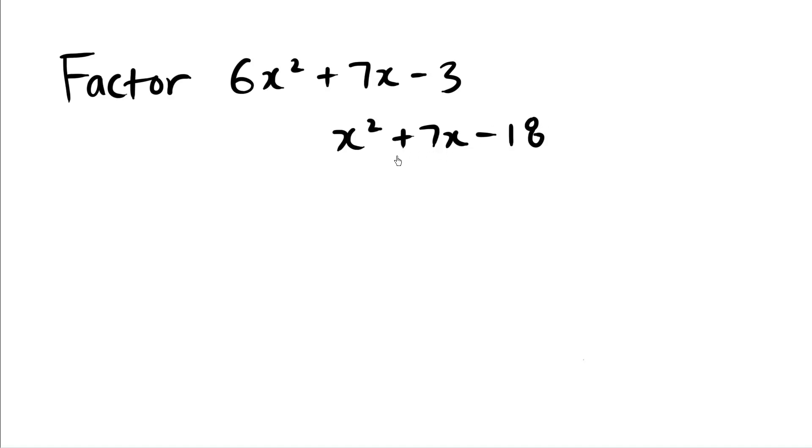We're then going to factor as normal. We have x, what two numbers multiply to be negative 18, yet add to be 7.